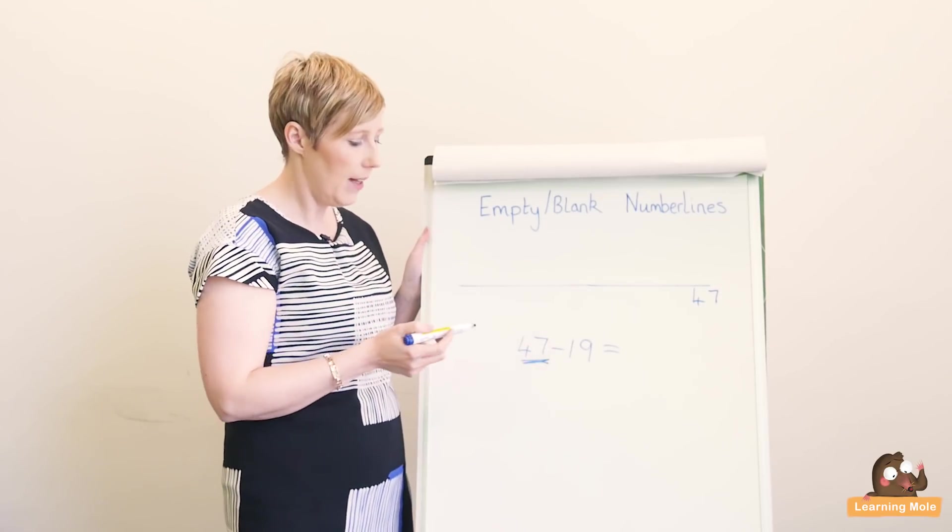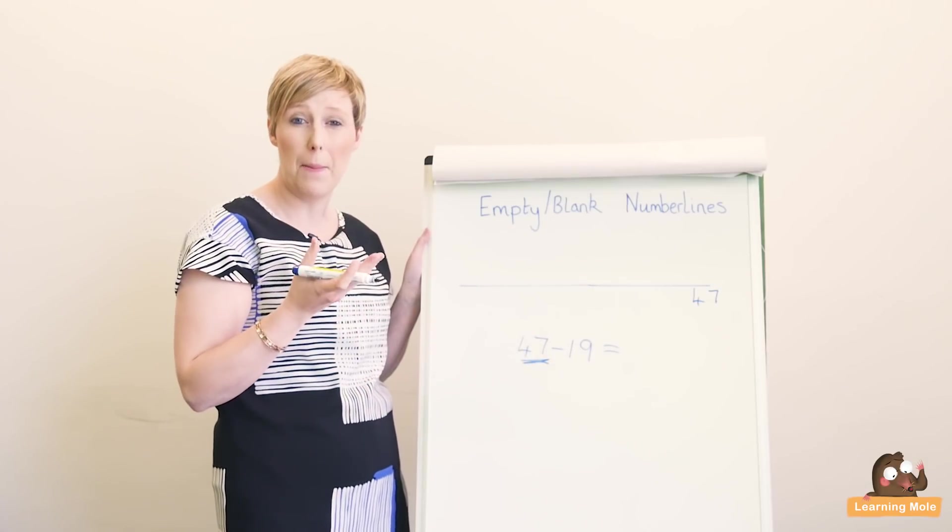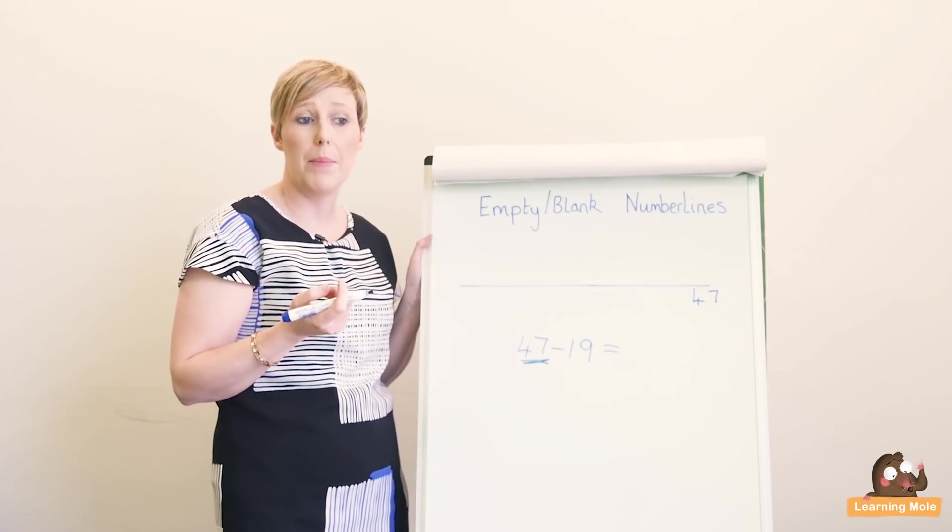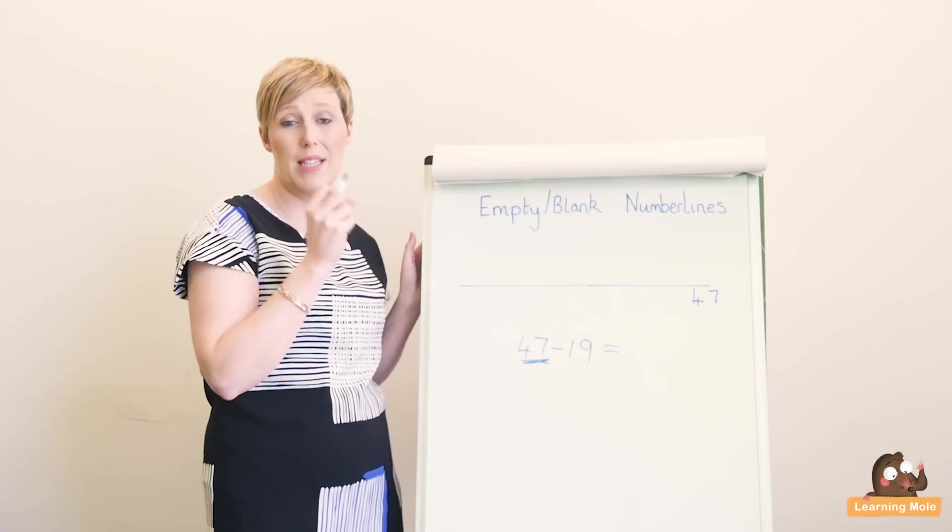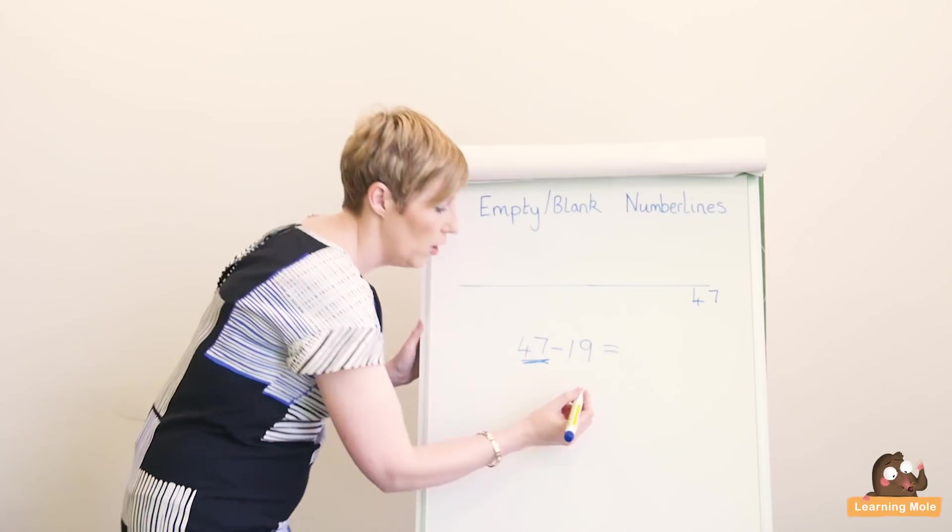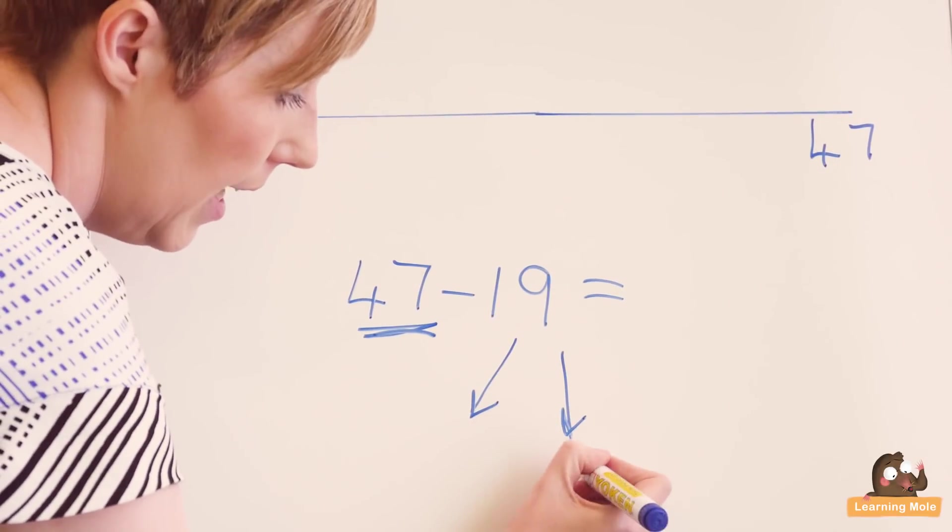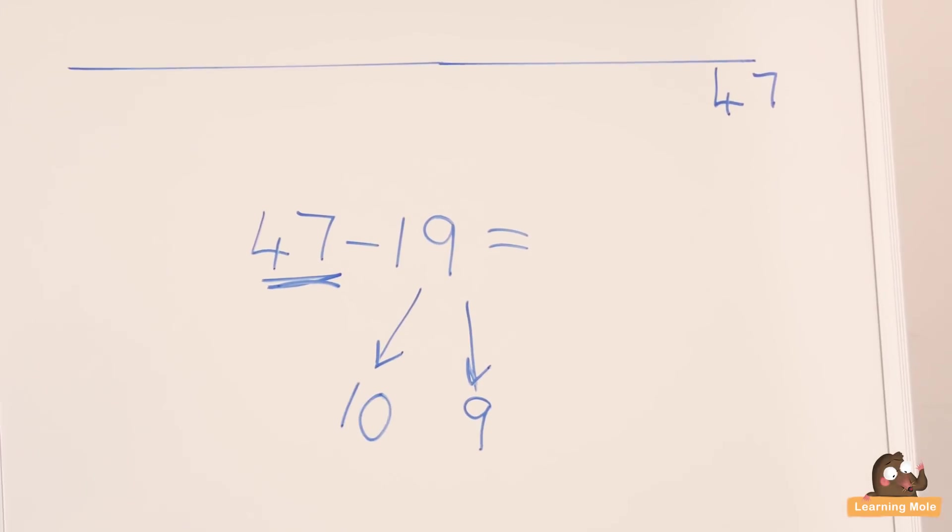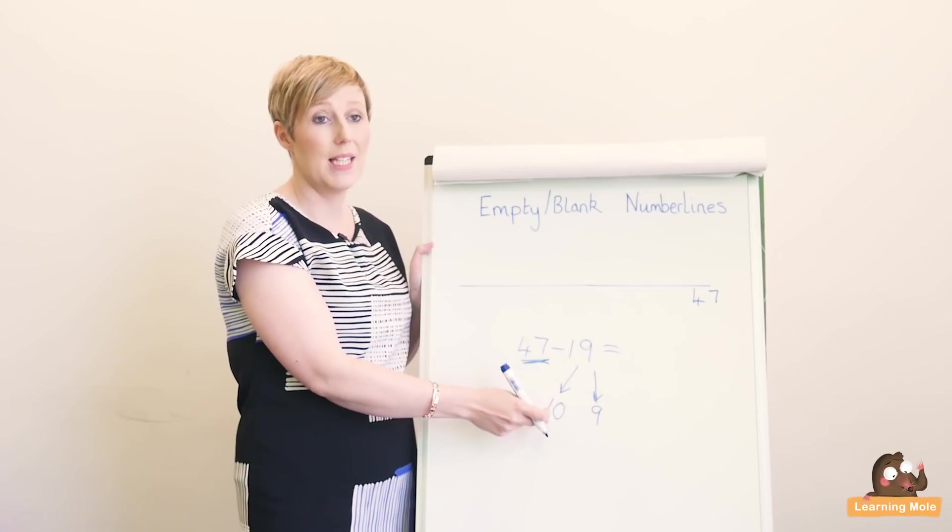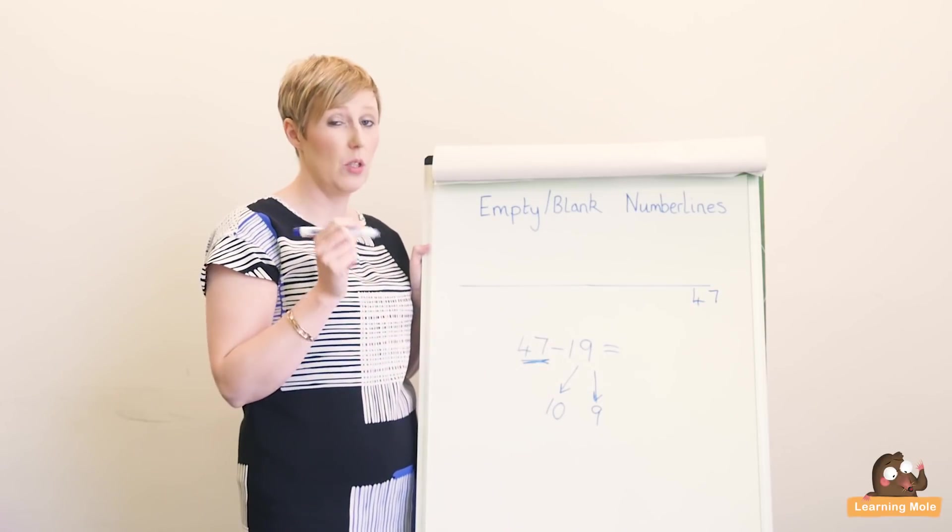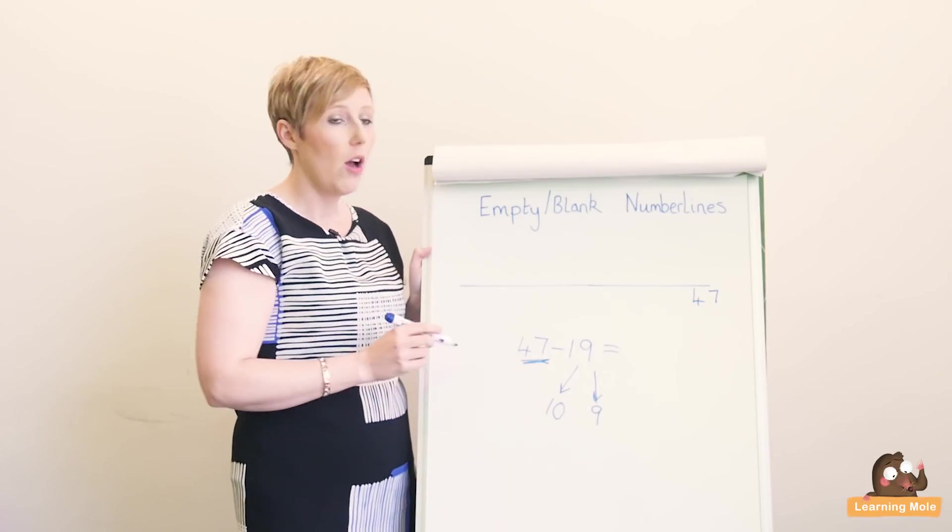So again, your 47 goes at the end of your number line. You're underlining it to say you've done it, and we need to count back 19. What you might be saying to your child here is, could we split this number up? Could we partition this number? Your child might hear about partitioning—partitioning just means breaking the number up into its tens and its units. So could we partition this number into tens and units? It's got nine units and it's got one ten. Very important that you should actually write down that this is 10 and it's not one, so again it's something you need to remember.